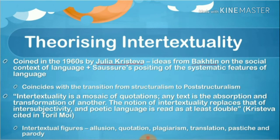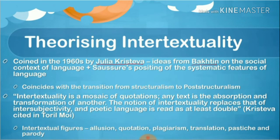The term 'intertextuality' was coined in 1960 by Julia Kristeva. Her ideas drew from Bakhtin — on dialogue and the social context of language — and from Saussure on the systematic features of language. Kristeva collected ideas from both Bakhtin and Saussure. Her coining of the term coincided with the transition from structuralism to post-structuralism. She described intertextuality as a mosaic of quotations.